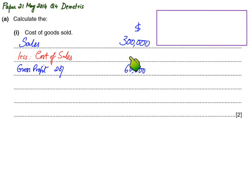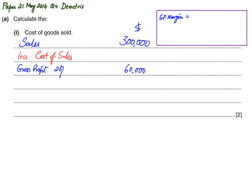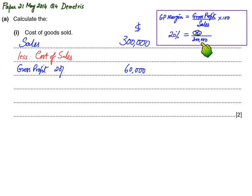I'm justifying why I multiplied 300,000 by 20 percent to find gross profit. As you have already studied, the formula for GP margin is: gross profit divided by sales revenue, multiplied by 100. The GP margin is already given as 20 percent. We do not have gross profit but we have revenue of 300,000. So to calculate gross profit, instead of dividing I will be multiplying — 300,000 multiplied by 20 percent gives 60,000.